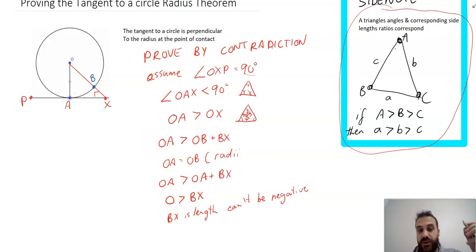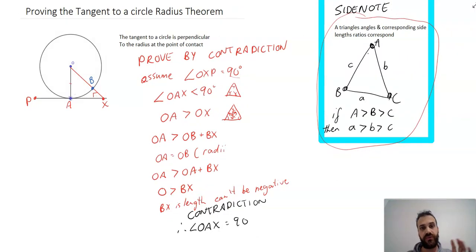Contradiction! That's our proof—we're done. Therefore, it's not angle OXP that's 90 degrees; it's angle OAX that's 90 degrees. Because X was just a random point and leads to a contradiction, the only conclusion is that the radius and tangent meet at a right angle. That's your first proof by contradiction. That angle is 90 degrees.